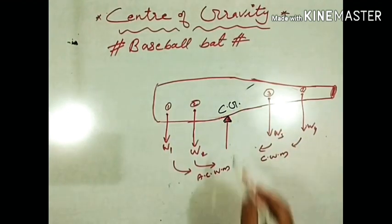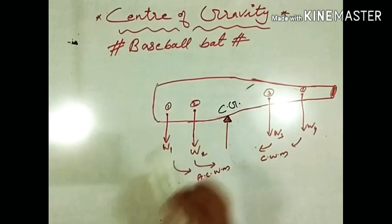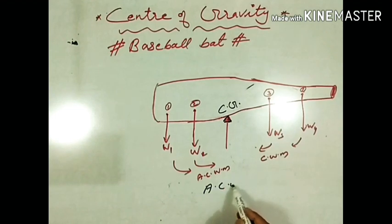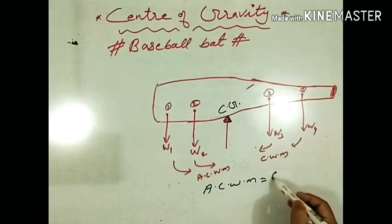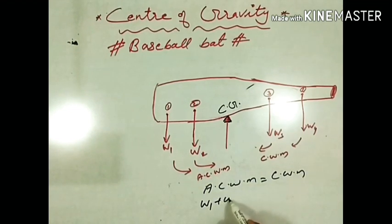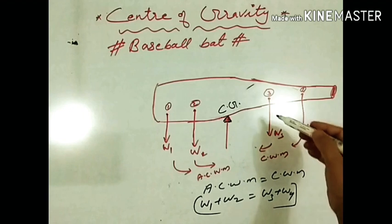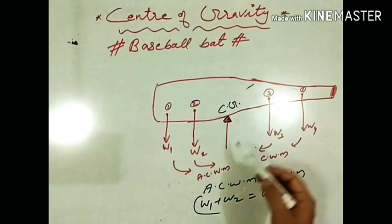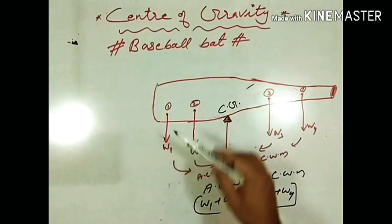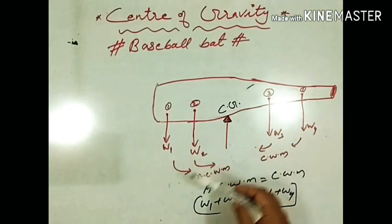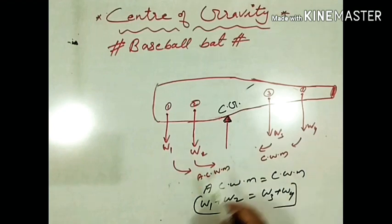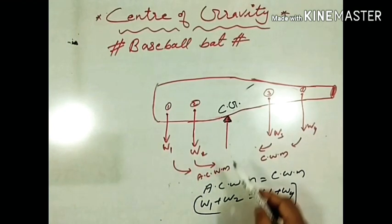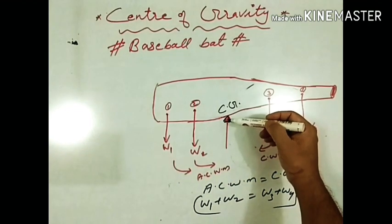So center of gravity, at center of gravity, when it is balanced at this point, at this spot, sum of the anticlockwise moment is equal to sum of the clockwise moment. That is, W1 plus W2 is equal to W3 plus W4. So when sum of the algebraic sum of the clockwise moment and anticlockwise moments are equal, it balances at the spot, that particular spot, we call it as center of gravity. So what is center of gravity? Center of gravity, CG of a body is the point about which the algebraic sum of the moments of weights of all the particles constituting the body is zero.